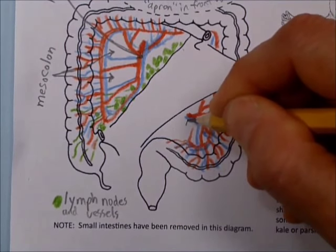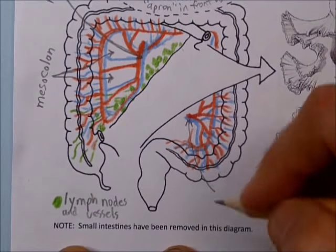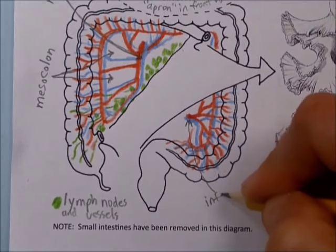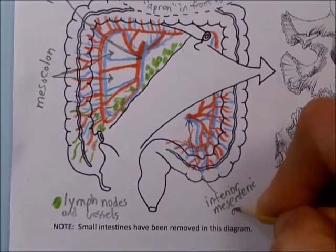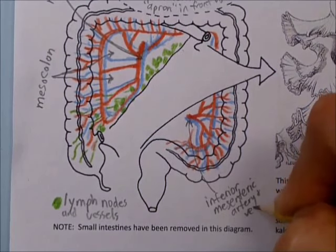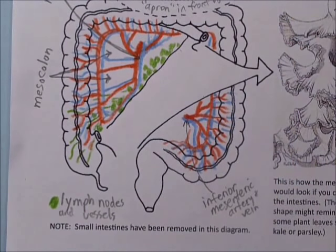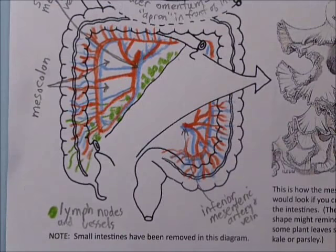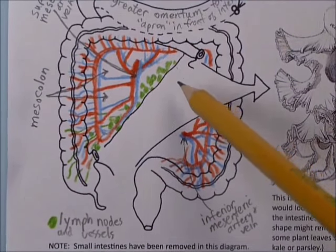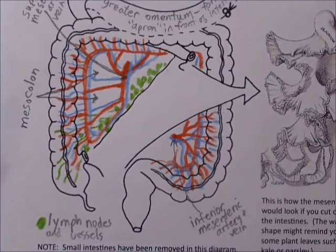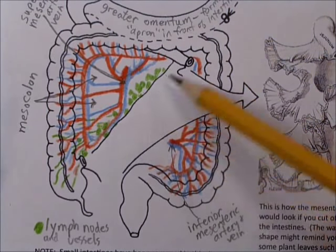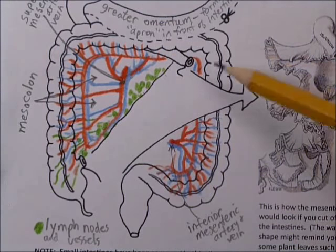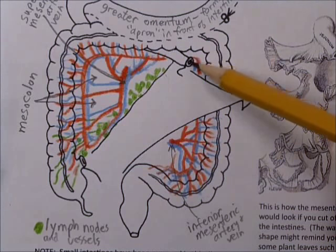These vessels right here — let's label those: the inferior mesenteric artery and vein. Now I think we're ready to talk about this thing here. The part of the mesentery which is actually just called 'the mesentery' is the part that holds the small intestines together. Here in this picture, we've snipped out the intestines.